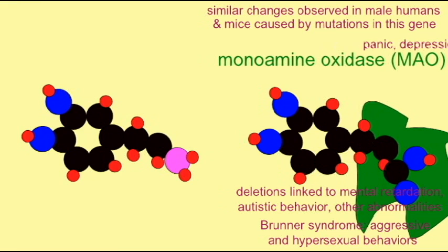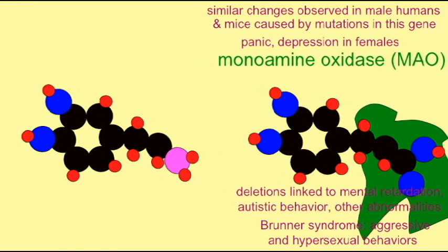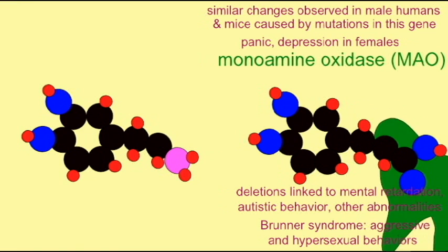Similar changes are seen in mice. Mutations in this same gene change the organization of the cerebral cortex, and MAO deletions in mice cause higher aggression and inappropriate sexual activity in males.